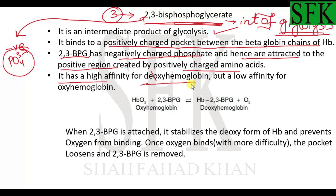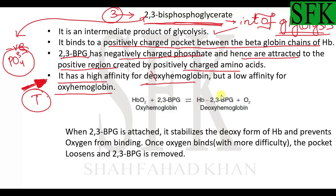2,3-BPG has a high affinity for deoxyhemoglobin but a low affinity for oxyhemoglobin. This means it can stabilize the T-conformation of hemoglobin and bind to the deoxy form very easily, remaining bound to it. The deoxyhemoglobin with 2,3-BPG has a very low affinity for oxygen — first because it is in the T-conformation, and secondly because 2,3-BPG further stabilizes this T-conformation, making it even more resistant to accepting an oxygen molecule.